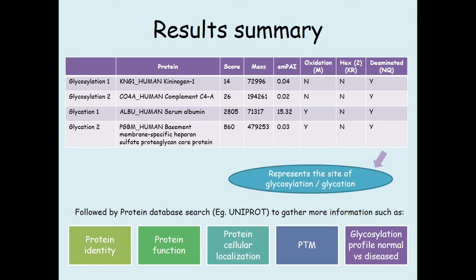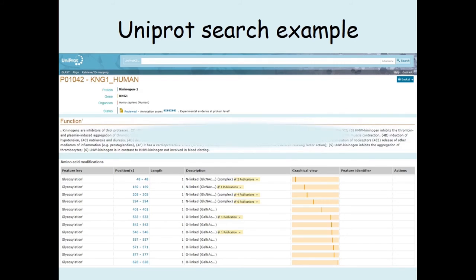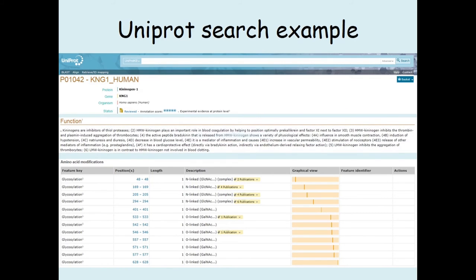By inputting the query in the UniProt database, we can also check and compare the amino acid modifications. Glycosylation is a very common PTM found in normal healthy individuals. We can use this listed glycosylation profile of the normal individual to compare to the glycosylation profile from the patient sample of the same protein. We could perhaps find divergence in the profile, and that might give us some clue of which glycosylation correlates with the particular disease.